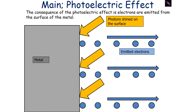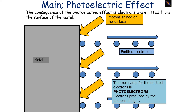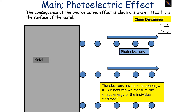The consequence of the photoelectric effect is that electrons are emitted from the surface of a metal. When photons are shined on a surface, electrons can be emitted. The true name for the emitted electrons is photoelectrons — electrons produced by the photons of light. Now these electrons have a kinetic energy, but how can we measure the individual kinetic energy of the electrons?